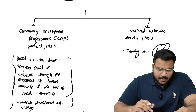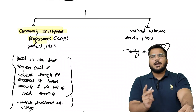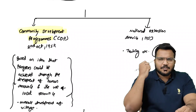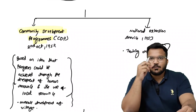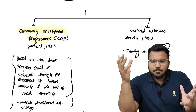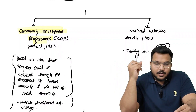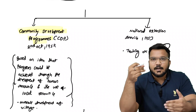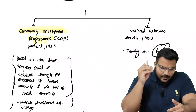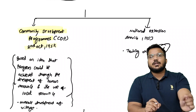Community Development Programme — एक American sociologist, जो एक architect भी थे, Etawah (UP) में आकर एक model type of thing शुरू करते हैं। वहीं से Community Development Programme (CDP) government के द्वारा start किया जाता है — उस समय के Prime Minister Jawaharlal Nehru जी के नेतृत्व में। CDP का आरंभ होता है 2nd October 1952 को, गांधी जी के birthday पर।